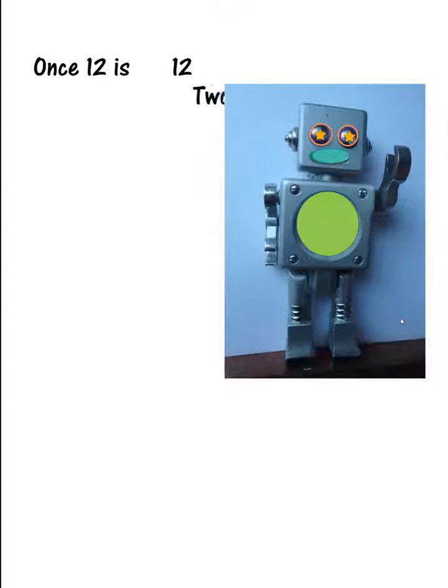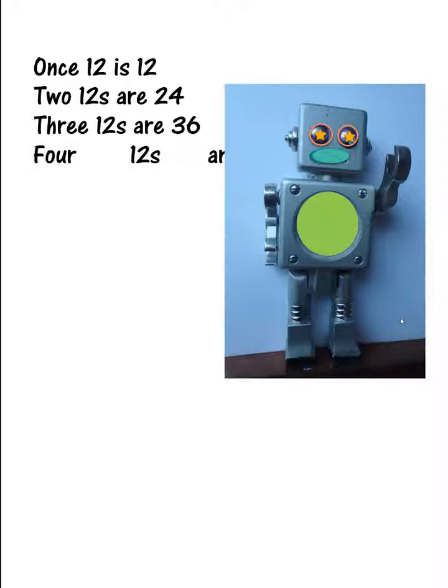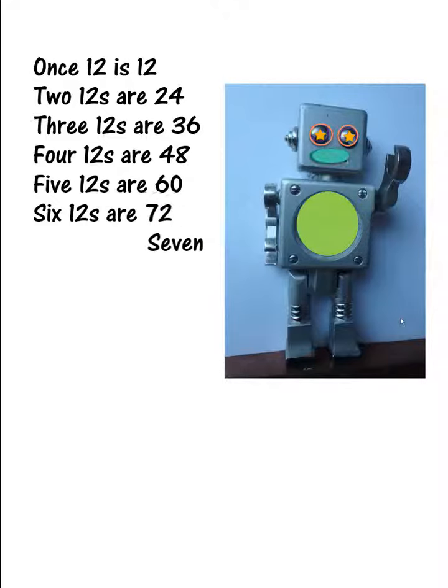Once 12 is 12, 2 12s are 24, 3 12s are 36, 4 12s are 48, 5 12s are 60, 6 12s are 72.